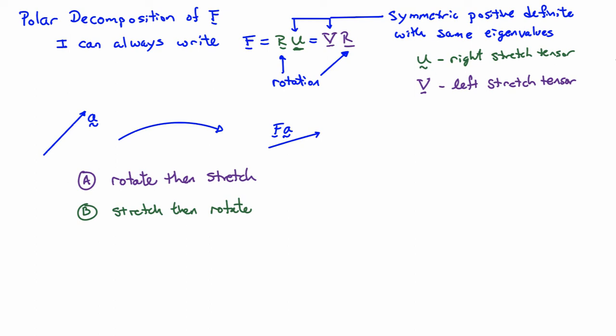So when you map an infinitesimal line segment from the undeformed to the deformed configuration, you can think of it as stretch then rotate, or rotate then stretch. There are two equivalent ways of thinking about it.